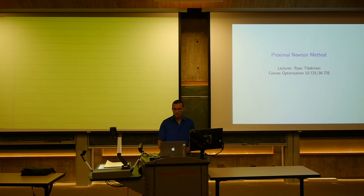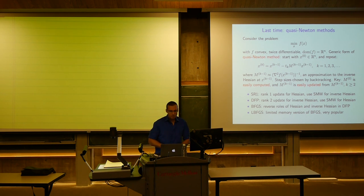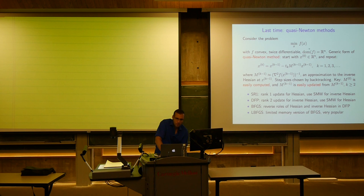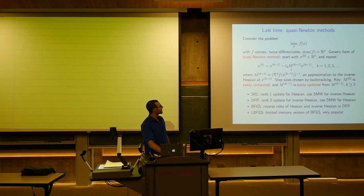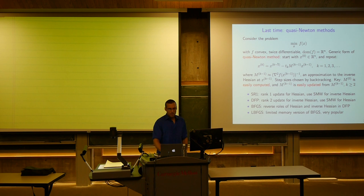This is also a nice follow-up to the second-order method unit we just finished. Last time, Javier gave a very nice lecture on quasi-Newton methods — here's a brief summary. We're looking at unconstrained smooth optimization where our criterion is convex and twice differentiable with full domain. The generic form of a quasi-Newton method uses a slightly different notation here since I'm also going to be using K, so I didn't want H to appear twice.